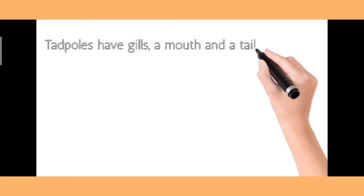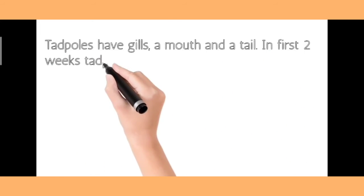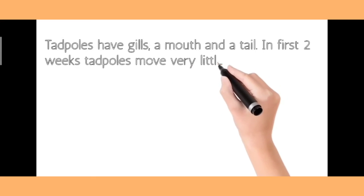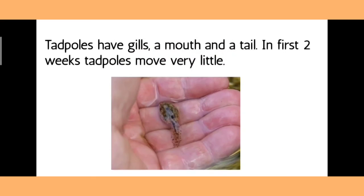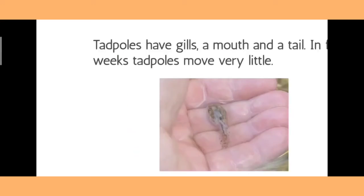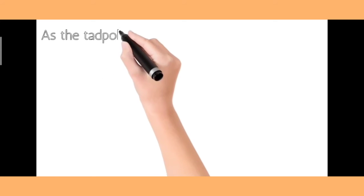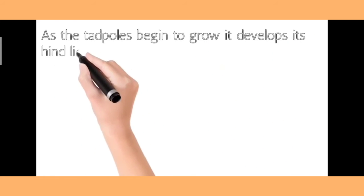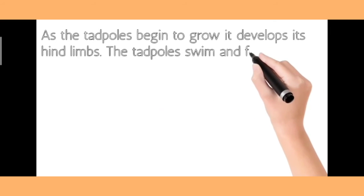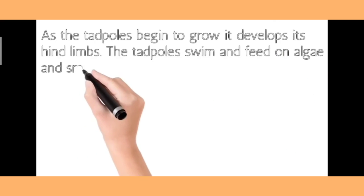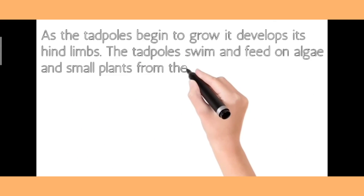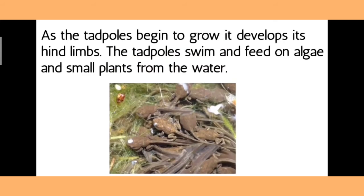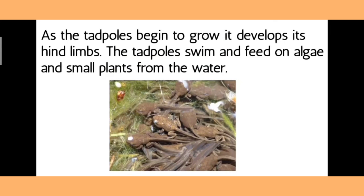Tadpoles have gills, a mouth, and a tail. In the first two weeks, tadpoles move very little. As the tadpoles begin to grow, they develop their hind limbs. The tadpoles swim and feed on algae and small plants from the water. They are mainly herbivores.